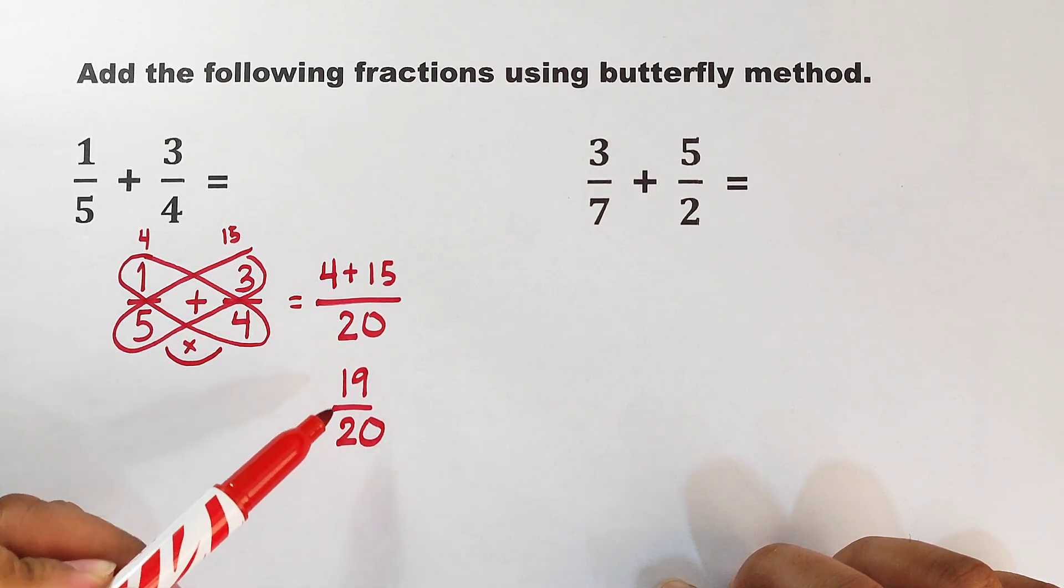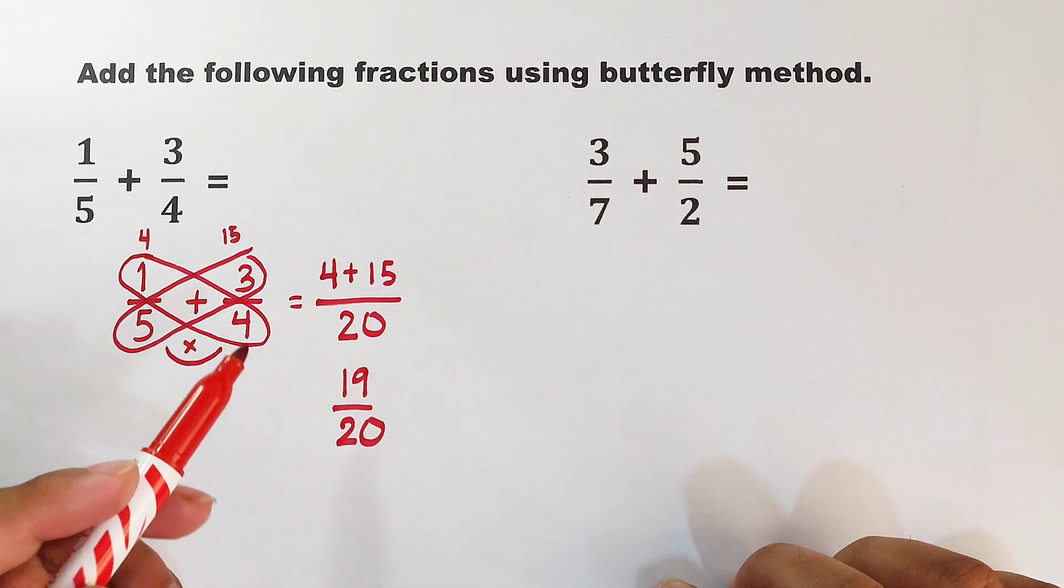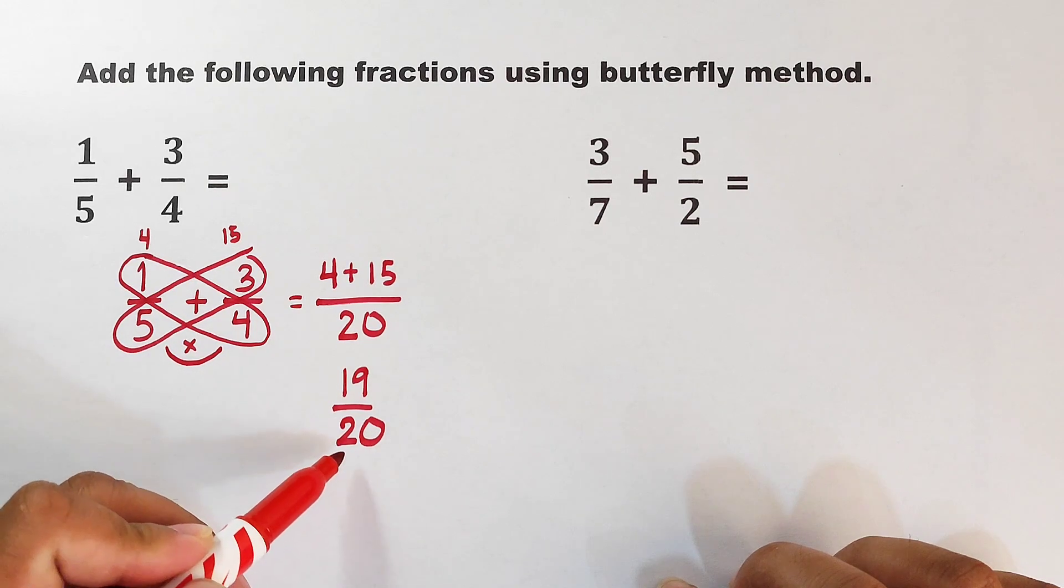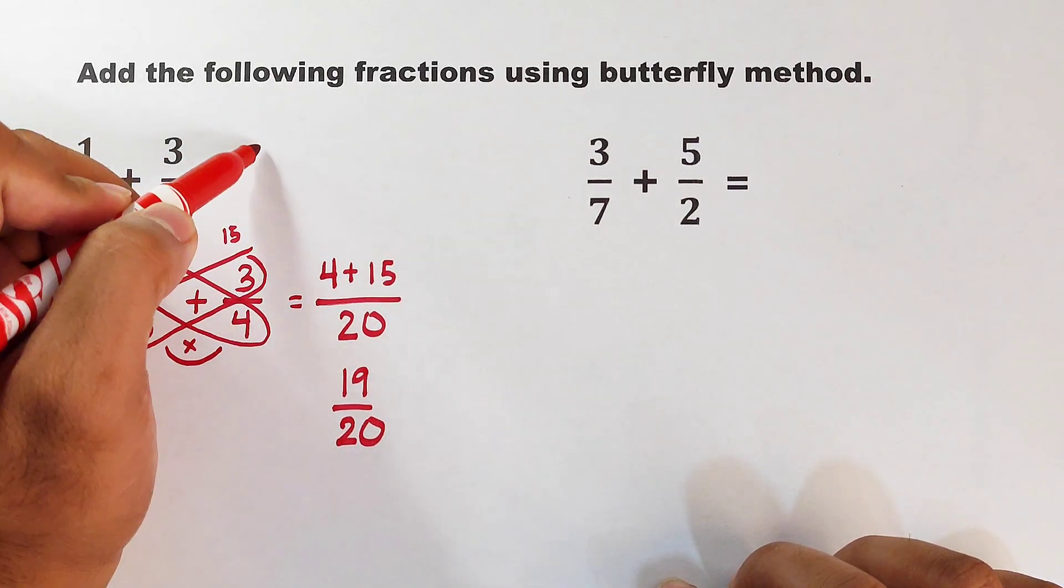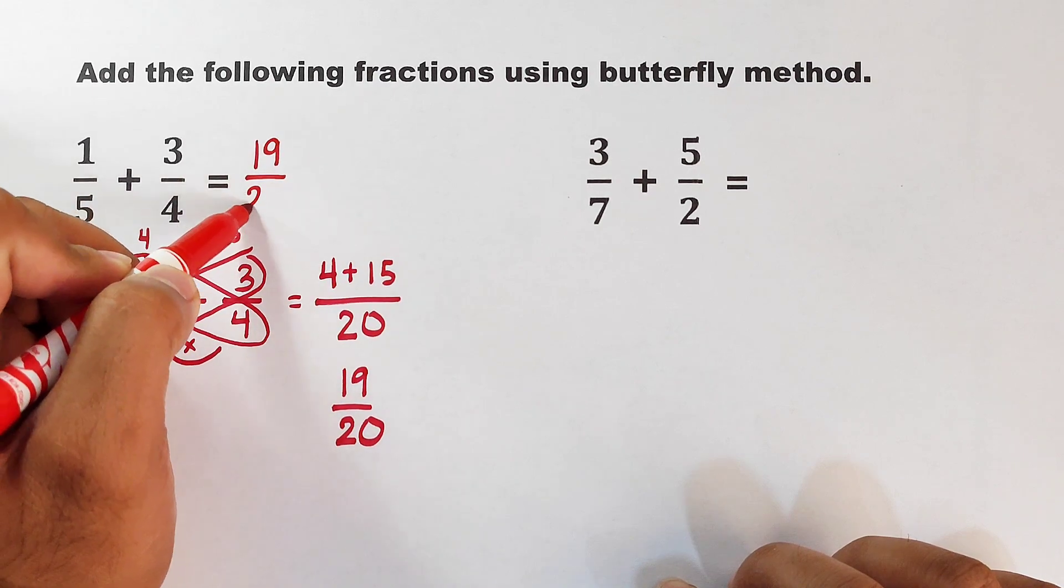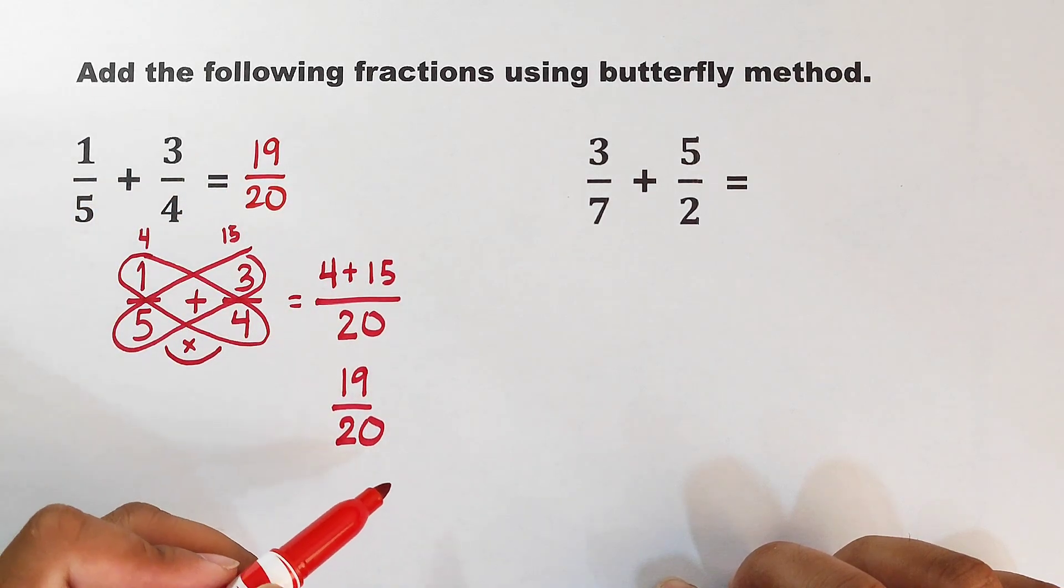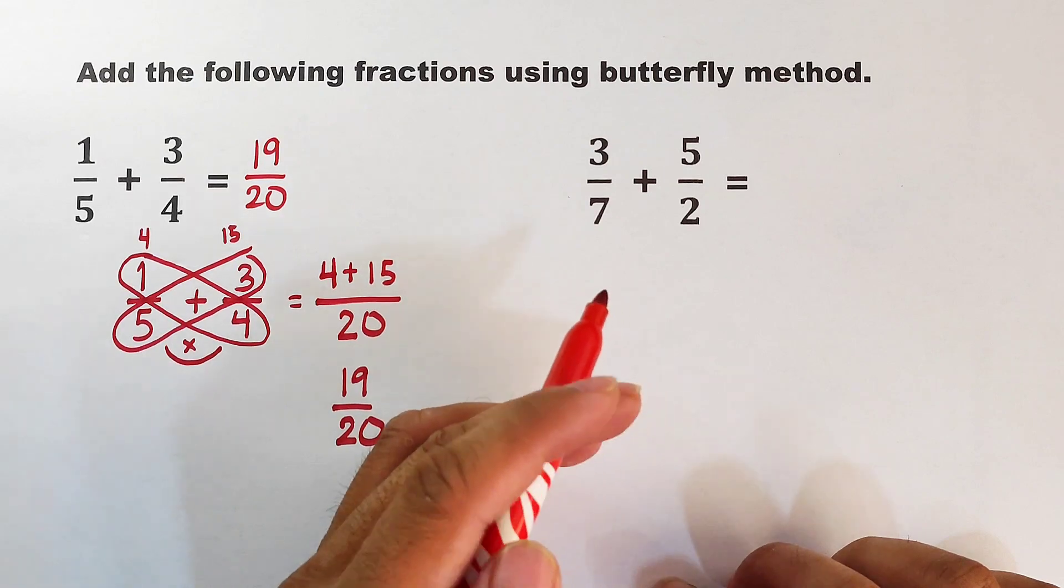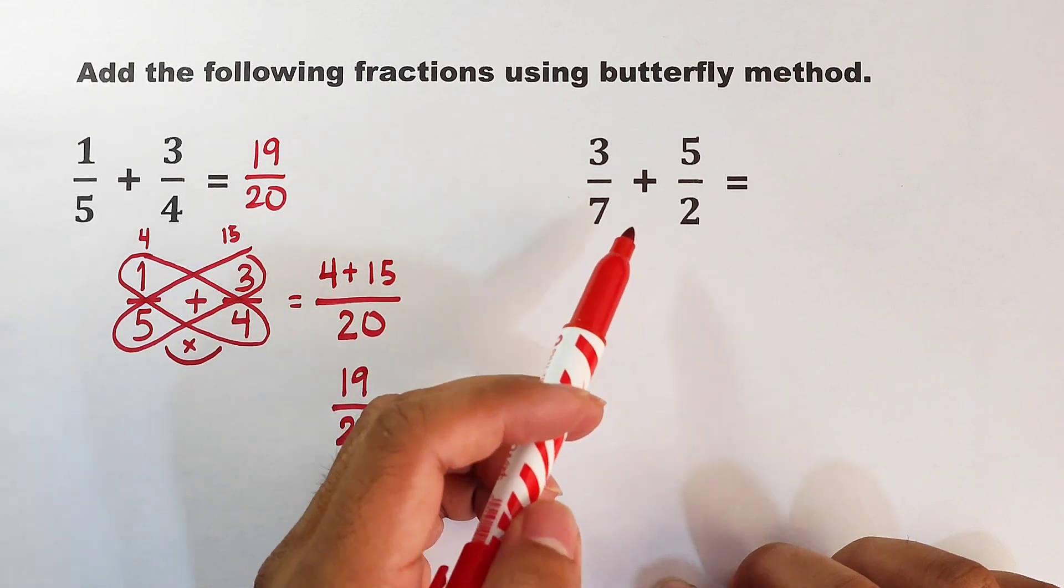The final thing we need to do is check if this sum can be simplified or not. Since 19/20 is already simplified, we can declare that this is the final answer: 19/20. Next, you can pause the video and answer